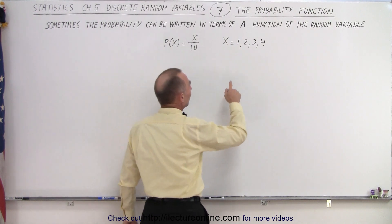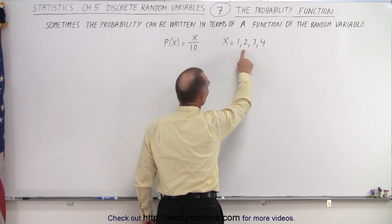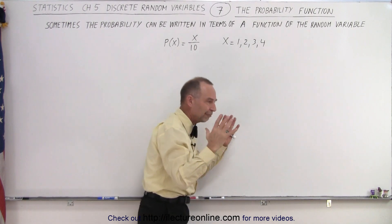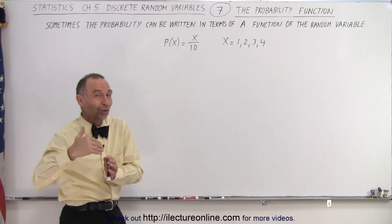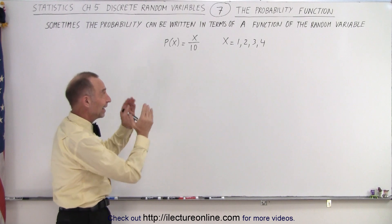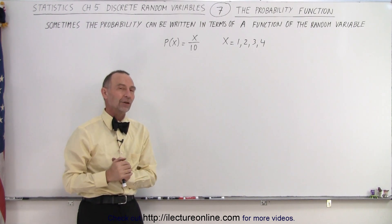And also notice that the only values allowed are 1, 2, 3, and 4 so that the variable x, the random variable x, the discrete random variable x is limited to just those four values.